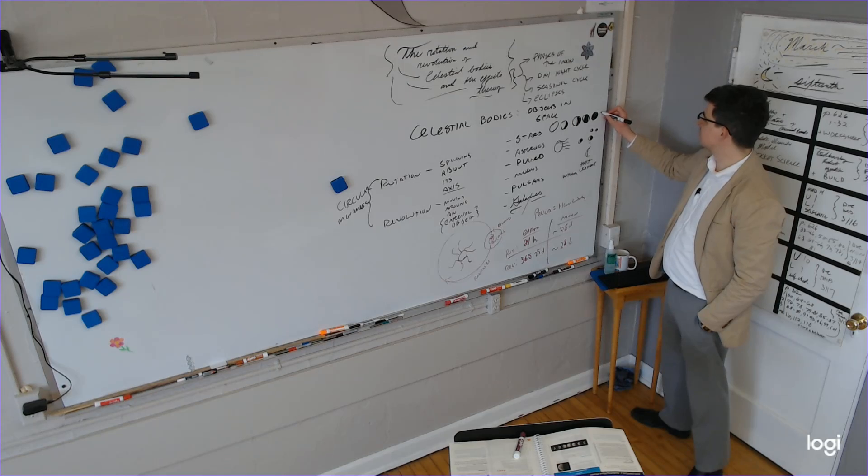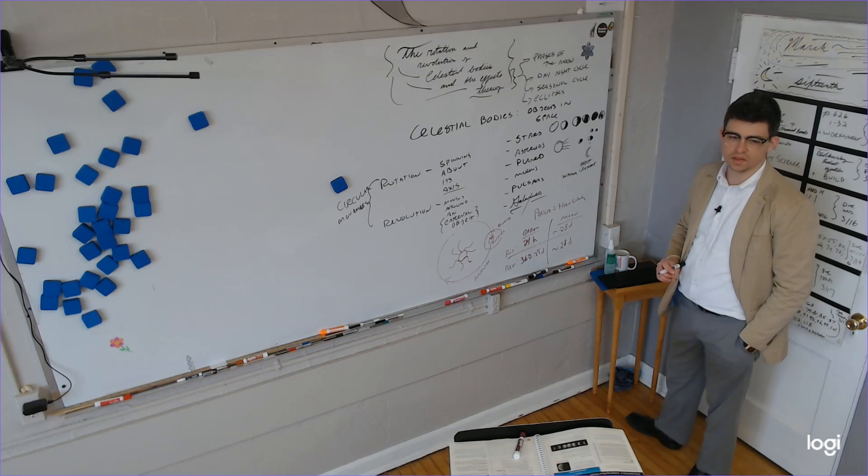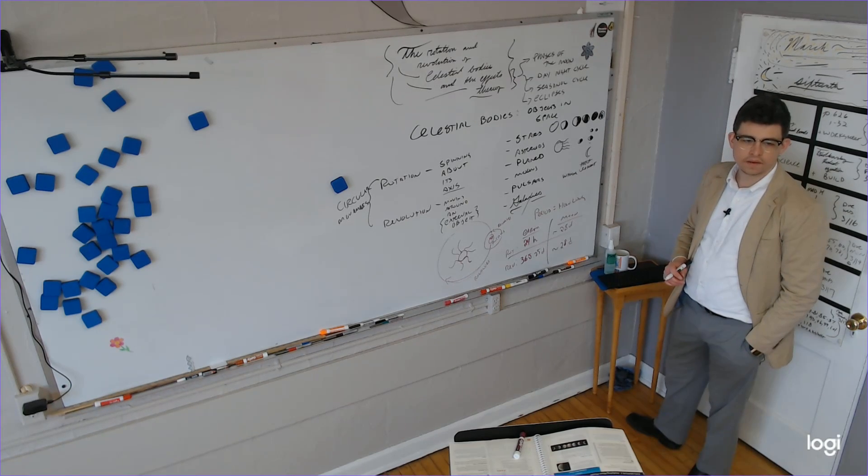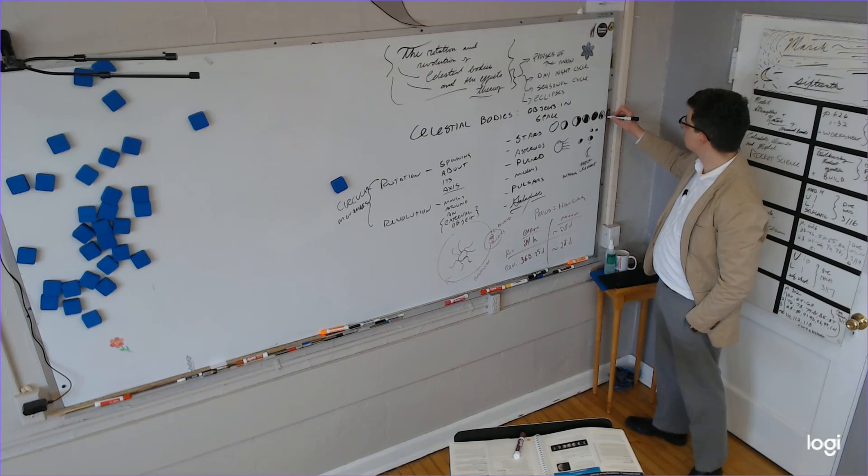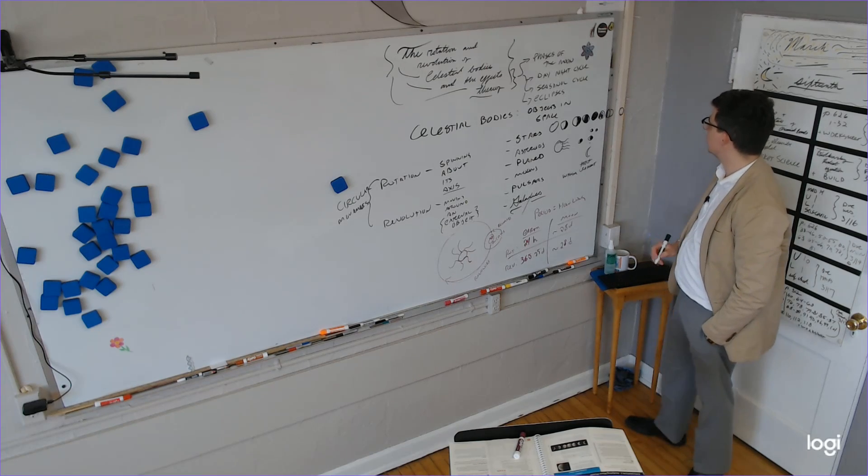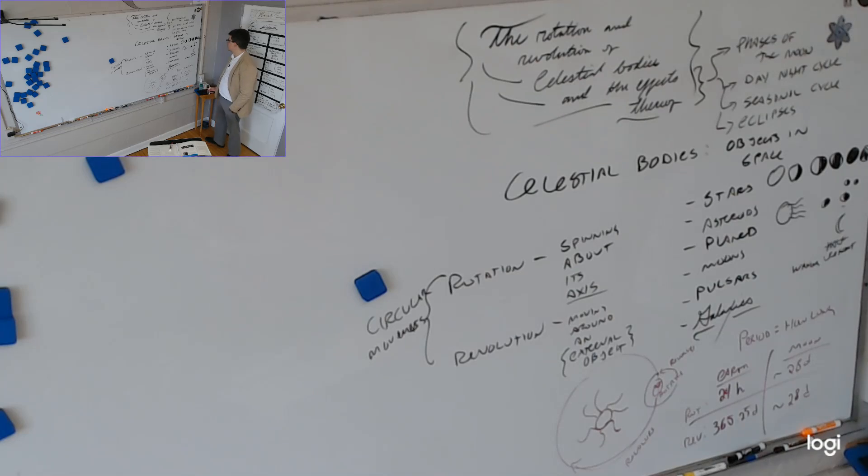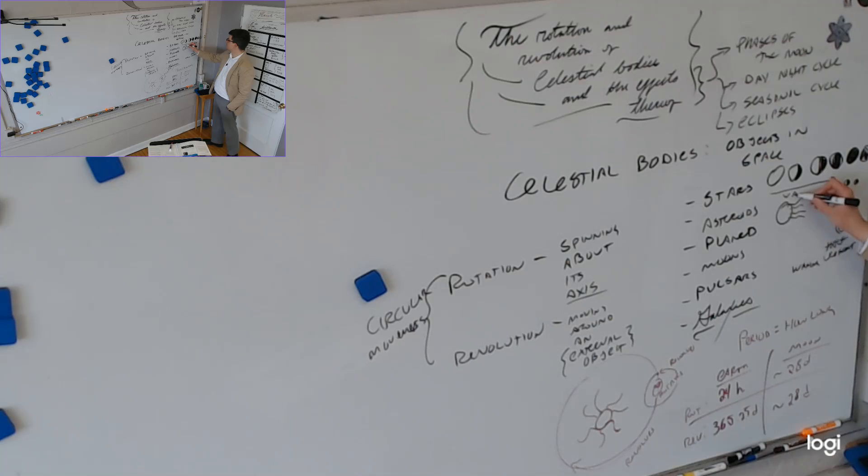And then we would have the waxing crescent. The words waxing and waning are kind of like old-timey. Waxing is getting bigger. Waning is getting smaller. First quarter. And then over here we have the waxing gibbous, and then over here we have the full moon again. This is waxing. What's this? New moon. What's this? Full moon. What's this? It's also the full moon, because it's periodic. It happens again and again and again. It's periodic.